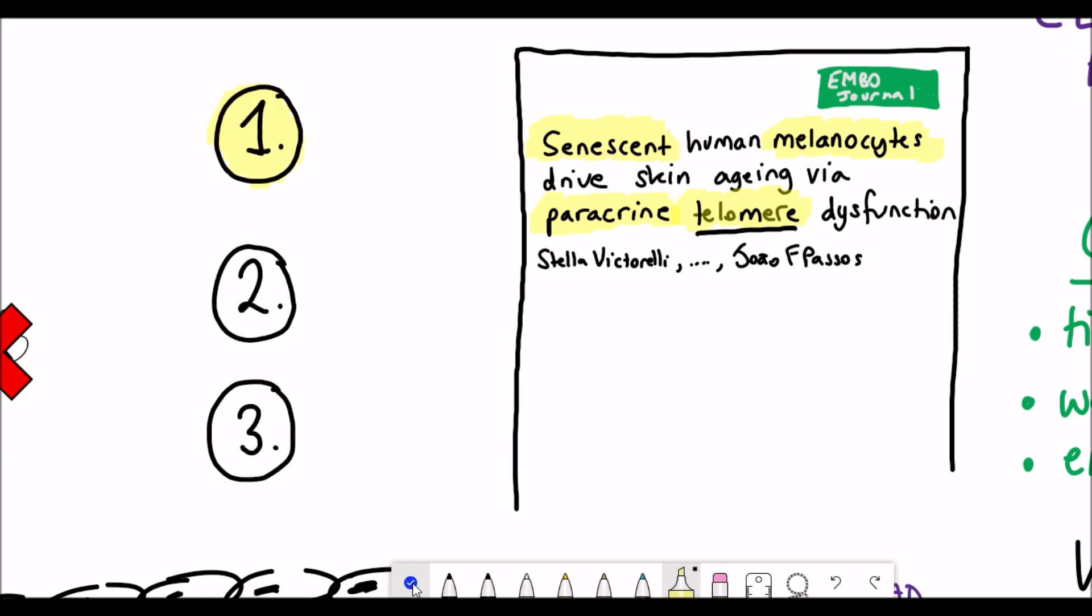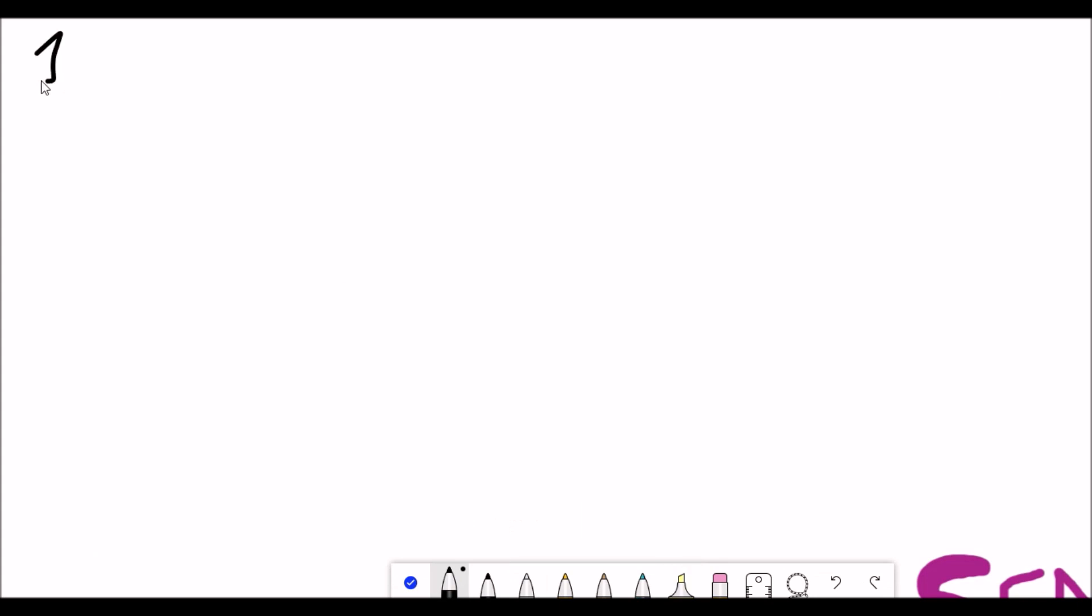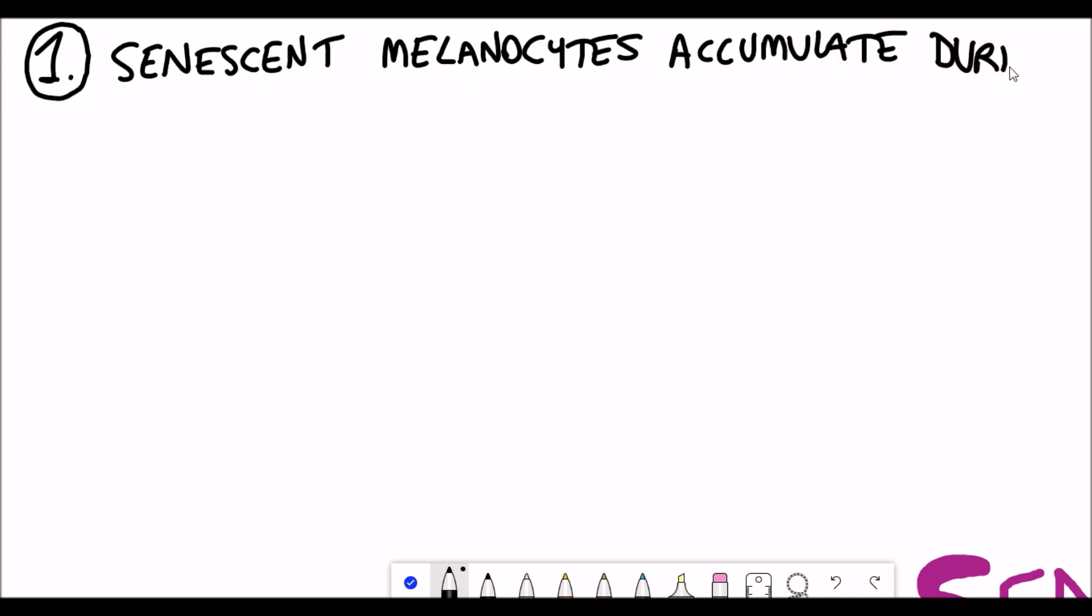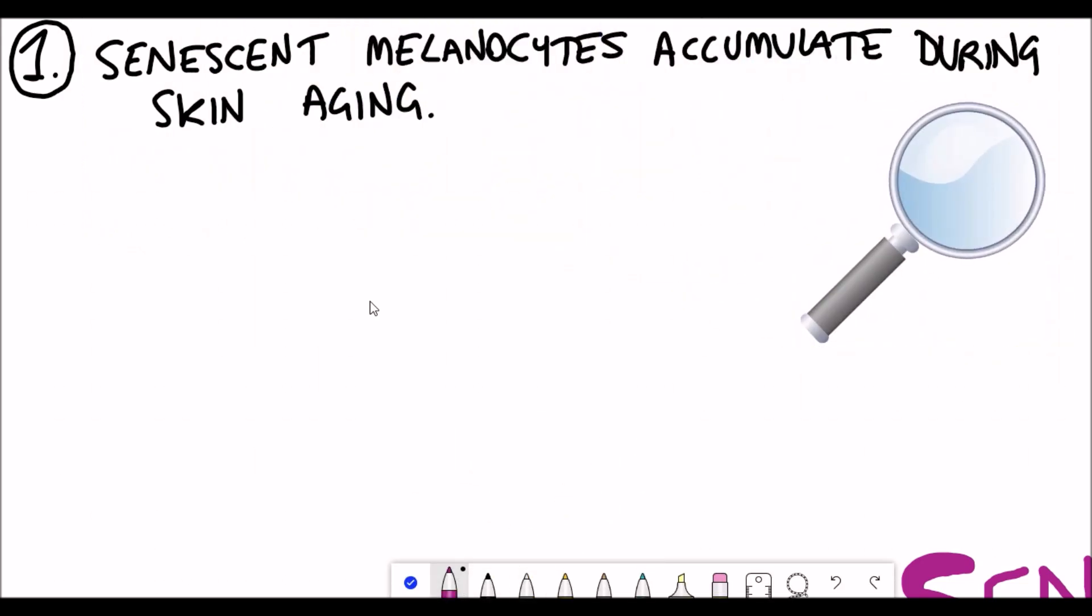Now we are in a position to discuss these results which I split into three key take-home messages. The first one is senescent melanocytes accumulate during skin aging.